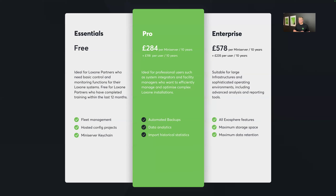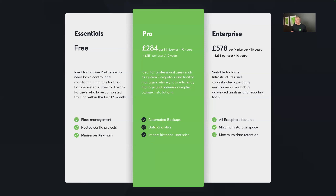Pro is where it gets more detailed — you get automated backups, data analytics, and the ability to import historical statistics. This is ideal for professional users such as system integrators and facilities managers who want to efficiently manage and optimise complex Loxone installations. Pro has a cost: £284 per Mini Server for 10 years, and £118 per user for 10 years. Compared to similar solutions on the market, it's a very cost-effective option.